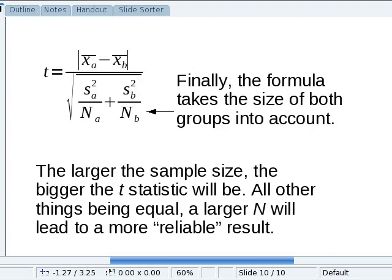And finally, the formula takes the size of both groups into account. Again, the larger the sample size, the bigger the t-statistic is going to be. Because all other things being equal, a larger N will lead to a more reliable result, and that reliable is in quotes because reliability is a mathematical and statistical construct, and I'm using it in the informal everyday sense of the word.